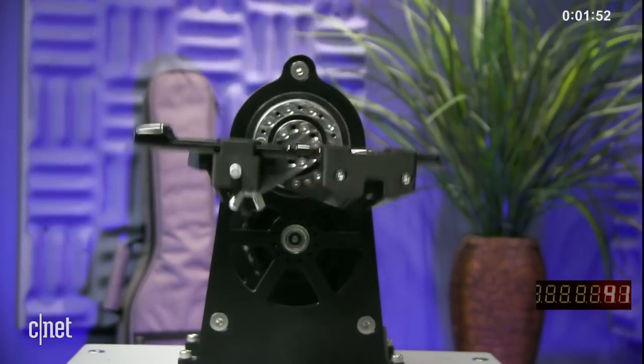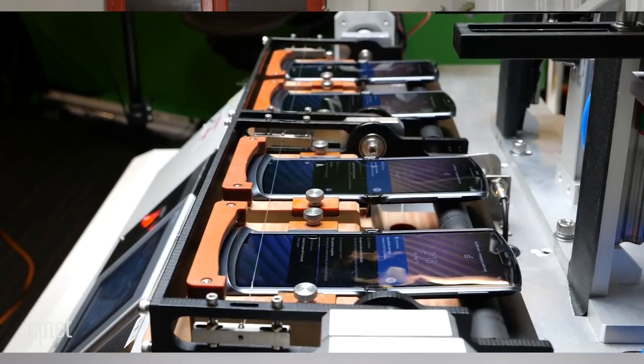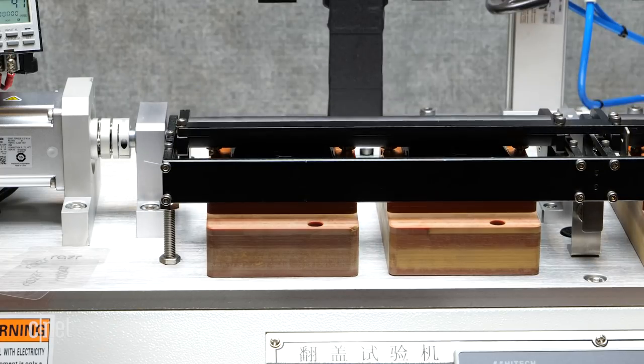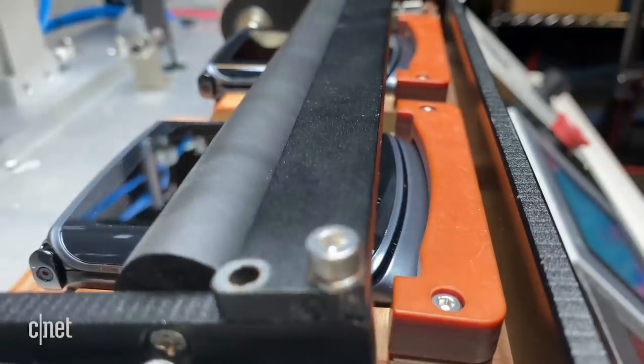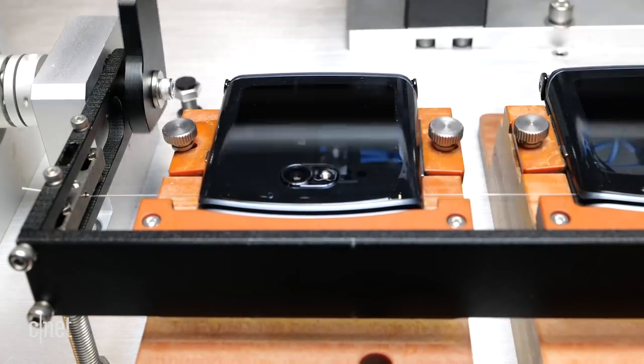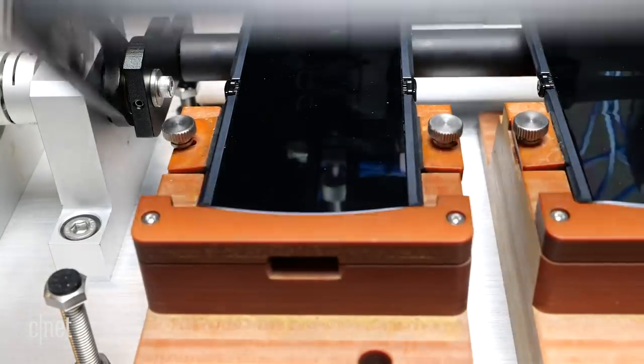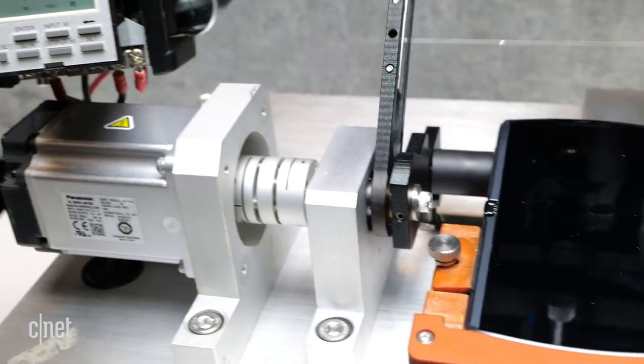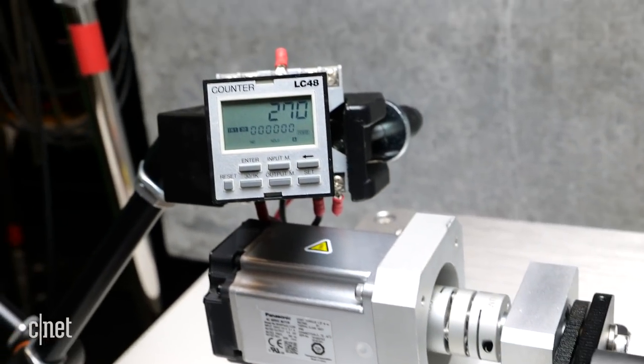And unlike the foldbot, the machine in Motorola's testing lab uses a wire to open the Razr fully open and an arm to close it all the way shut. Motorola claims that the Razr screen can be opened and closed 200,000 times. To give you an idea of how many times that is, you could open and close the phone a hundred times a day for five years and still not hit that number.